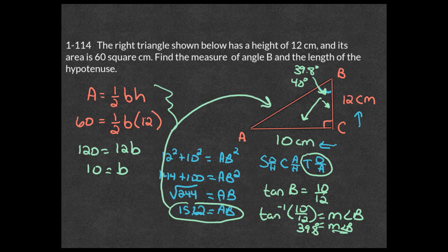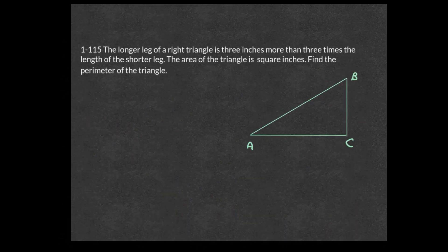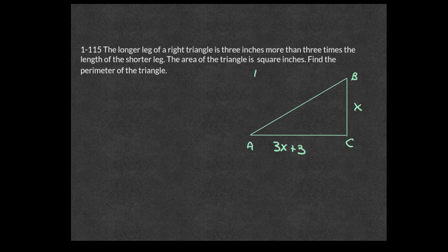The next problem: the longer leg of a right triangle is three inches more than three times the shorter leg, and the area is 84 square inches. Find the perimeter. Let x be the shorter leg, so the longer leg is 3x plus 3. Setting up the area equation: 84 equals one-half times base times height.